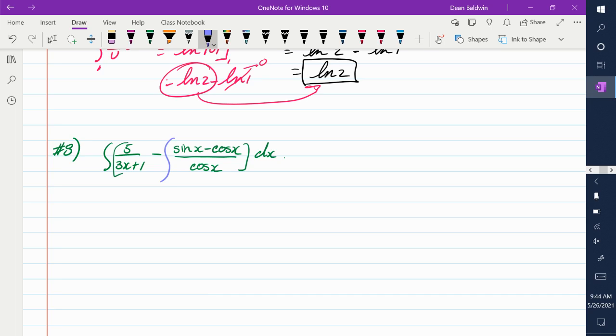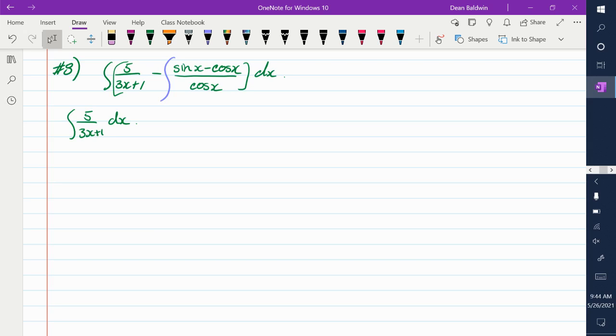And then we'll deal with the first one here. So the integral five over three x plus one dx. What do you do? Substitution. What's u going to be? The only thing it can really be is the denominator, right? So u is going to be three x plus one. So du is equal to three dx. Du over three is equal to dx.